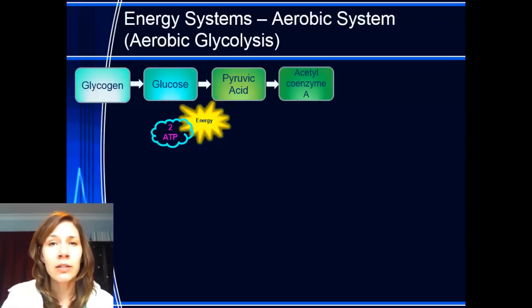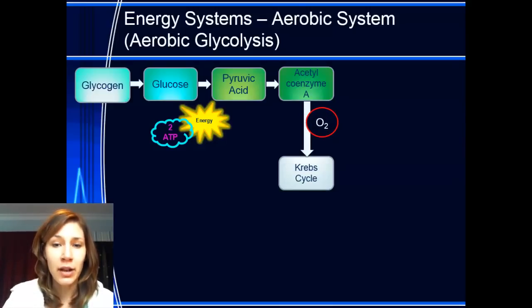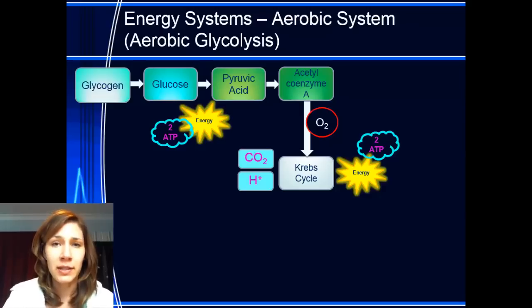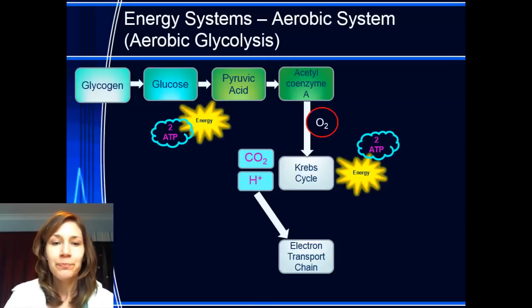So pyruvic acid is then converted into a chemical called acetyl coenzyme A. Now, you don't really have to know what acetyl coenzyme A is, you just have to know it exists. Because what happens to it is when there's oxygen around, it actually enters another process called the Krebs cycle. And the reason for that is because we can squeeze some more energy out of it to create some more ATP. Unfortunately, it's only 2 more ATP. But as a result of this, we end up processing carbon dioxide and hydrogen ions. Now, in this case, the hydrogen ions are a good thing, because they go into one more process called the electron transport chain. So, so far, we've got the acetyl coenzyme A. It's gone into the Krebs cycle. The Krebs cycle has spat out some energy, and it's also spat out some carbon dioxide and hydrogen ions.